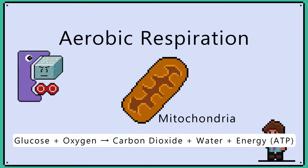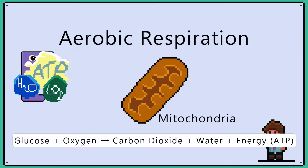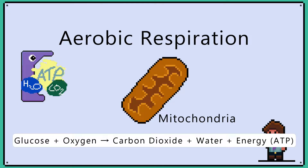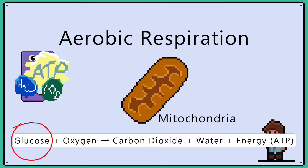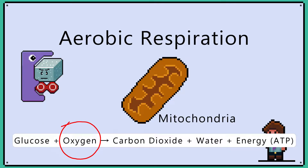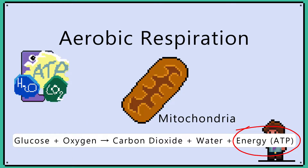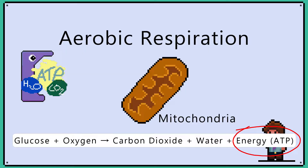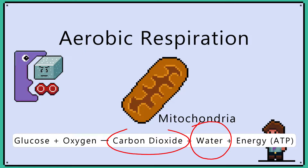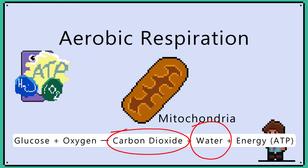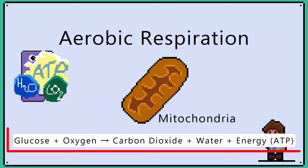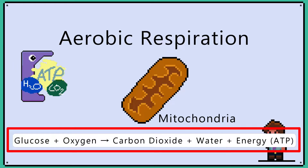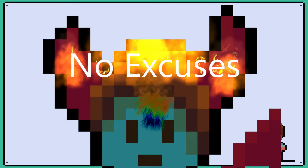Aerobic respiration is an enzyme-controlled process that happens in the mitochondria. Glucose reacts with oxygen and energy is released in the form of ATP. Water and carbon dioxide are also produced as by-products of the reaction. You need to learn the word equation for your exam. No excuses.